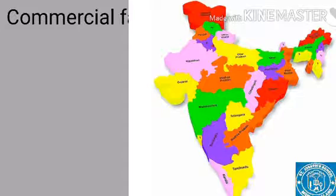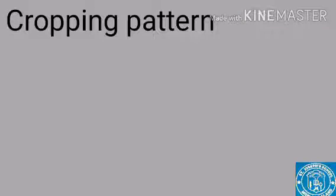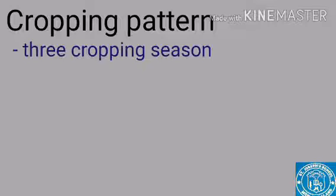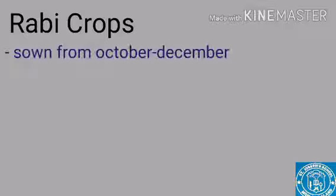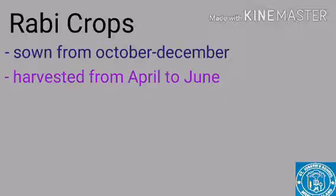The second topic we are going to discuss is the cropping pattern. In terms of agricultural purposes, India has three cropping seasons: Rabi, Kharif, and Zaid. Rabi crops are sown from October to December and harvested from April to June. Some important Rabi crops are wheat, barley, peas, gram, and mustard.